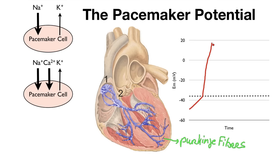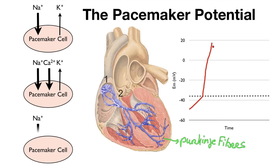Then at the peak, we have sodium coming in and potassium leaving, but voltage-gated potassium channels are going to open so that the conductance for potassium increases significantly and potassium is going to rush out of the cell, repolarizing the membrane.